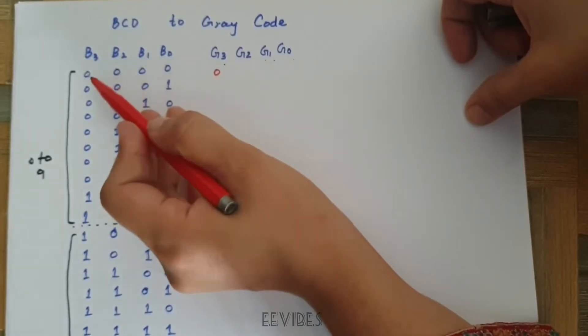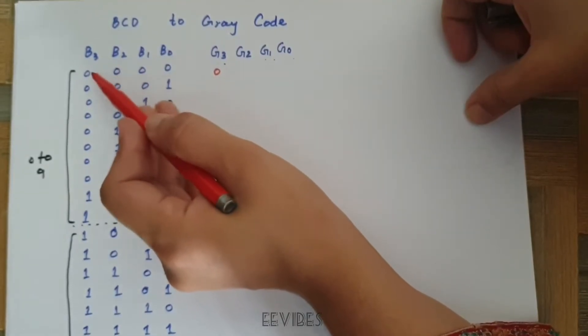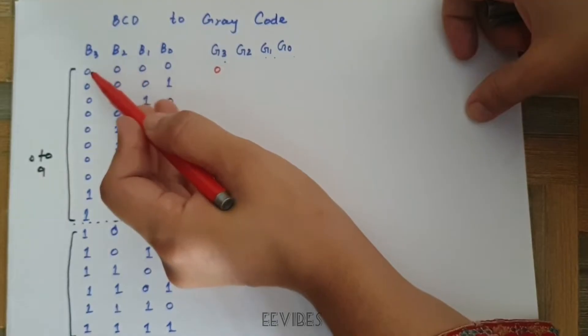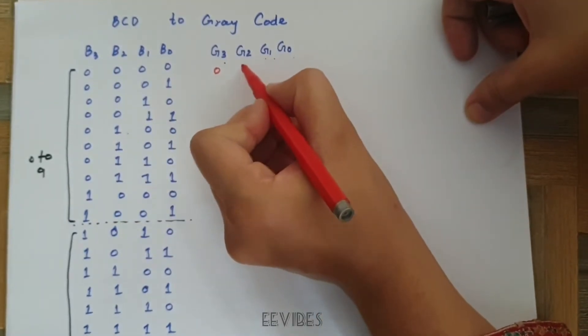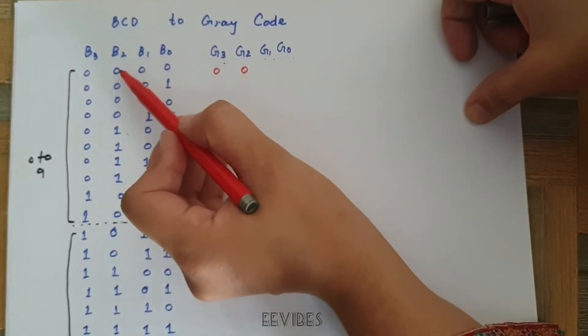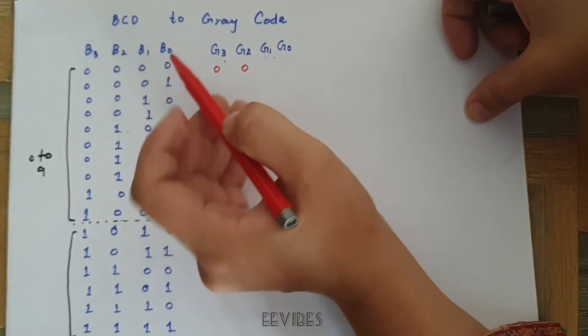Then we compare the two consecutive bits. If the two consecutive bits are same, we mark it as 0. If they are different, we mark them with 1. Then we compare the next two consecutive bits.